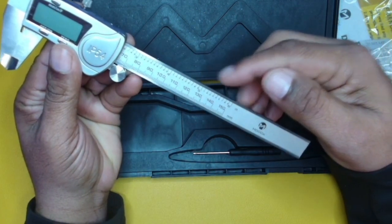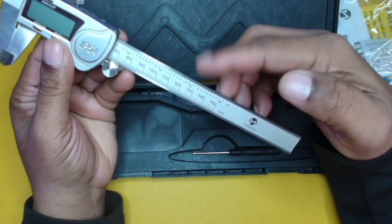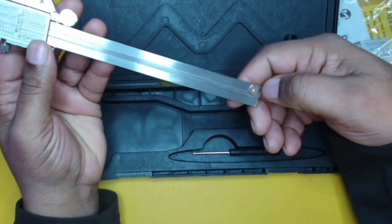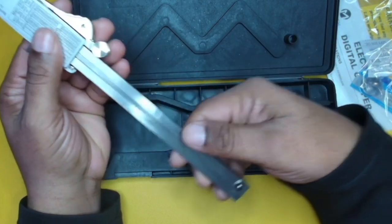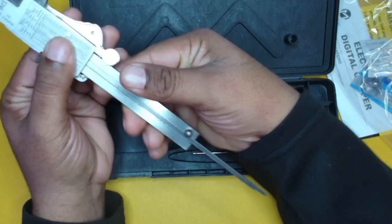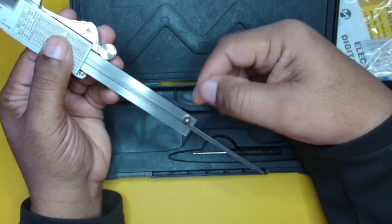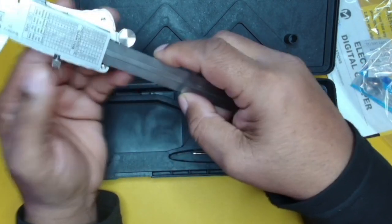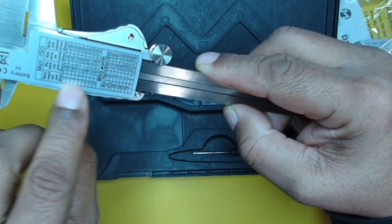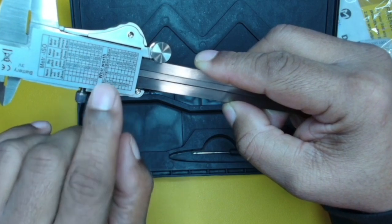This is 150 millimeter length for this caliper. This also has a depth measuring device here on the back, which is that little rod that you see coming out here. So if you wanted to measure inside of something how deep it is, that's what you would use. And you also get some measurement information here on the back that might be helpful to some.